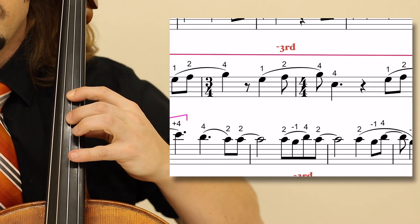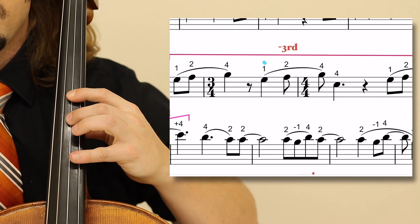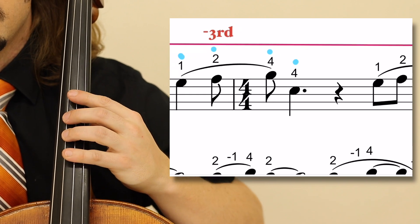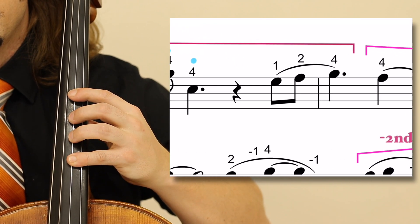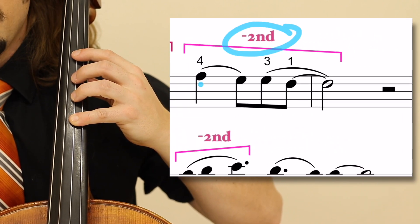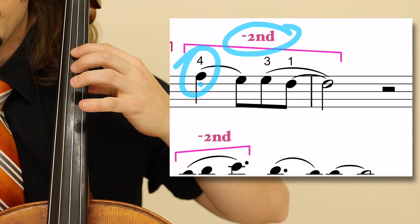That is G, A flat, B flat, G, A flat, B flat, crossing over to the E flat, doing it again, and then shifting back to lower second position for the four, which is an A flat, three, three, one.